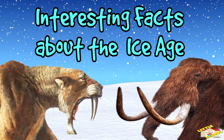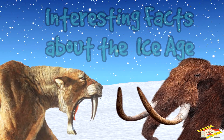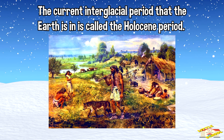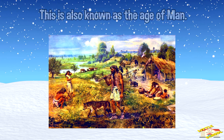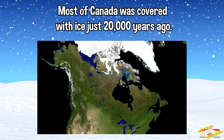Now here are some interesting facts about the ice age. The current interglacial period that the Earth is in is called the Holocene period. This is also known as the age of man. Most of Canada was covered with ice just 20,000 years ago.